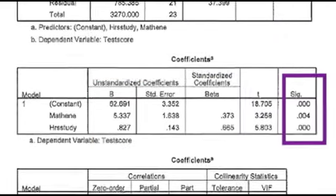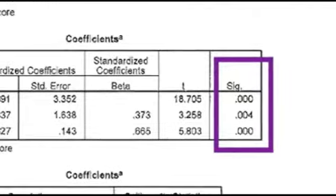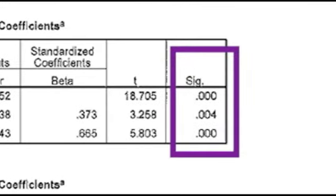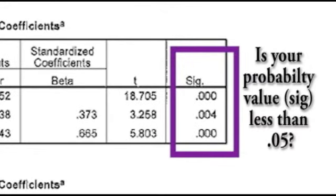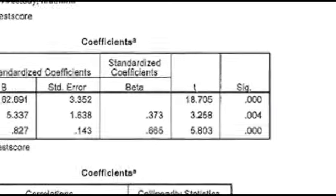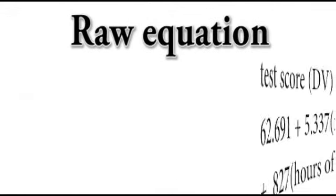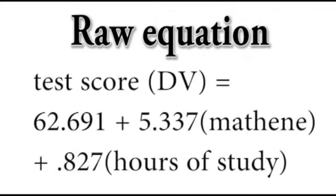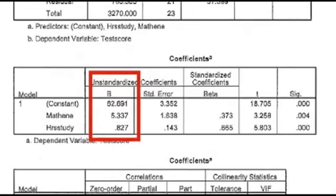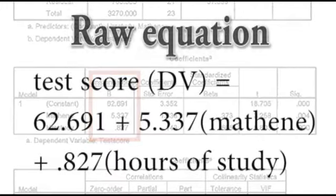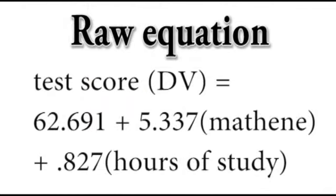In the same box, you'll see a significance column. Remember, usually our alpha level is at 0.05. So in here, we see that both mathene and hours of study are significant predictors of test scores. So firstly, to write our raw equation, we're going to take the B column under unstandardized coefficients. The raw equation is going to be your test score, which is our criterion variable, equals the constant 62.691 plus 5.337 mathene plus 0.827 hours of study. This will give you your raw equation.